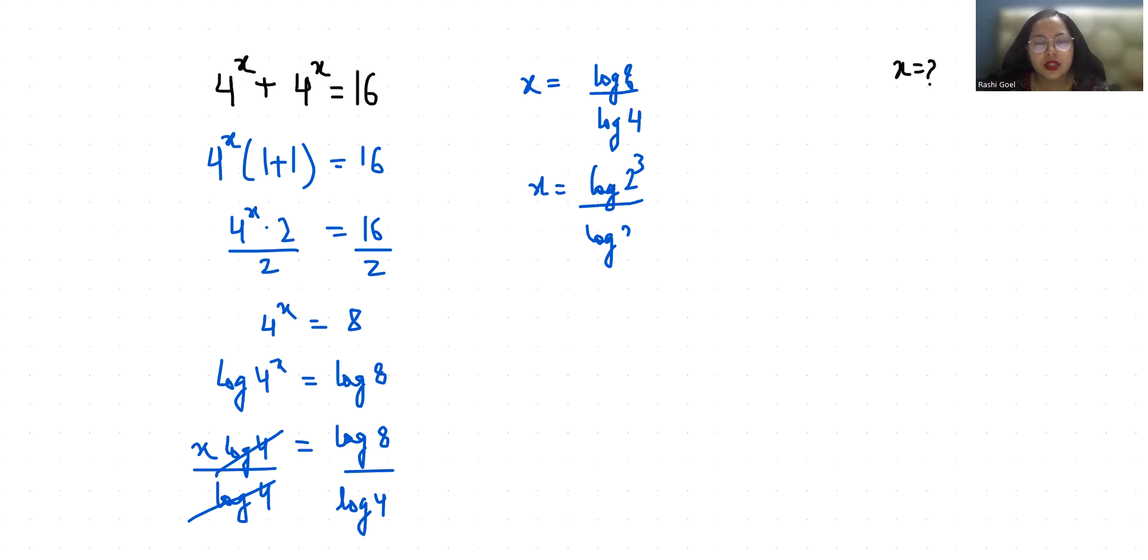So x equals 3 log 2 by 2 log 2. We can cancel out log 2 by log 2, so the value of x is 3 by 2, or 1 and 1/2.